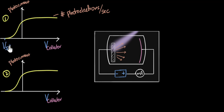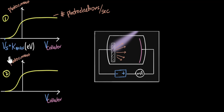The stopping voltage is a direct indicator — in fact, it's equal to, in electron volts, the maximum kinetic energy. We've talked a lot about this in our previous video, so feel free to go back and check that out.